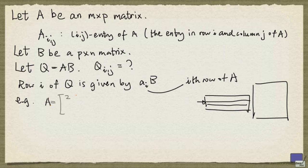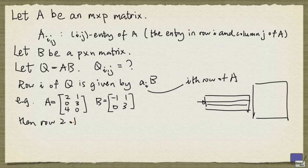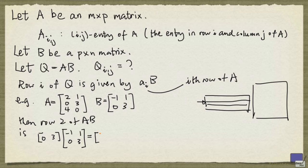For example, if A is this matrix here and B is this matrix, then the second row of AB is given by the second row of A, and you take the product of that with B. The first column is going to be 0 times minus 1 plus 3 times 0, and that's just 0. And in the second column, we have 0 times 1 plus 3 times 3, and that's 9. So this is the i-th row of Q.